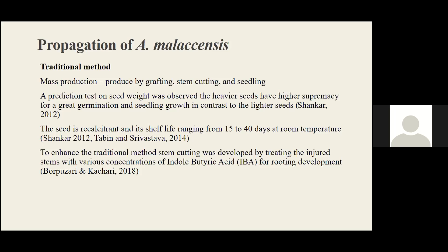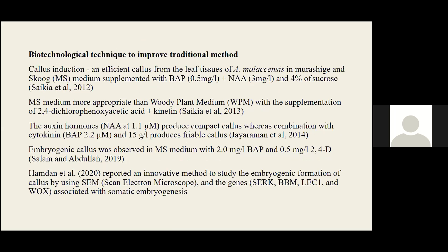Since Aquilaria malaccensis is an endangered species, its propagation and conservation are very important. Traditionally, mass production has been done by grafting, stem cutting, and seedlings, but due to external factors, these traditional practices are not sufficient to meet market demand. One limiting environmental factor is the seed's very low shelf life, ranging from 15 to 40 days. Stem cutting was developed by treating injured stems with various concentrations of indole butyric acid for root development.